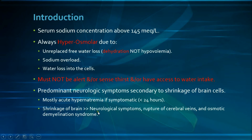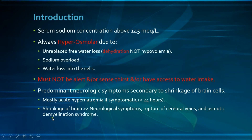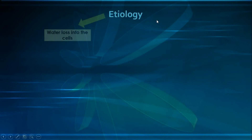The exact pathophysiology is as follows: shrinkage of the brain cells first causes neurological symptoms and may also cause rupture of the cerebral veins, leading to focal intracerebral and subarachnoid hemorrhages, possibly causing irreversible neurological damage. The shrinkage of the brain cells could also cause osmotic demyelination syndrome.